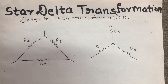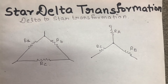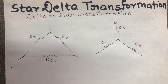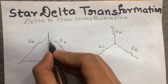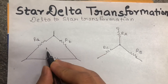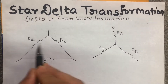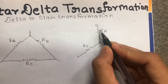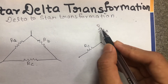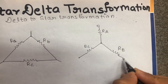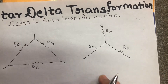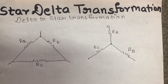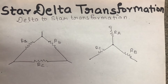We will cover when we can start delta in star and when we can start delta in star. First of all, delta is like this — a triangle shape — and there is resistance. Then star means that star is like this. First of all, we have delta to star transformation. How is the star transformation? We can make that decision.